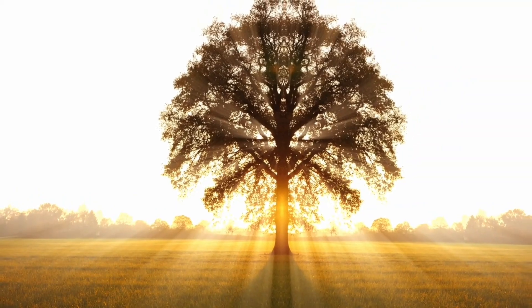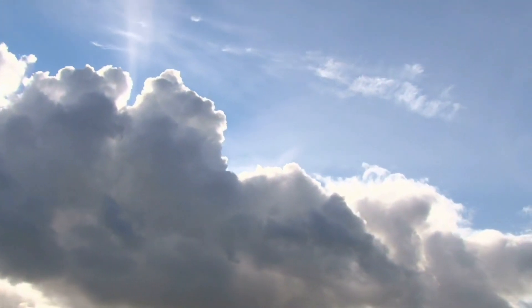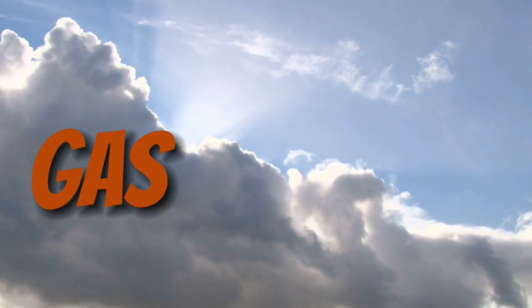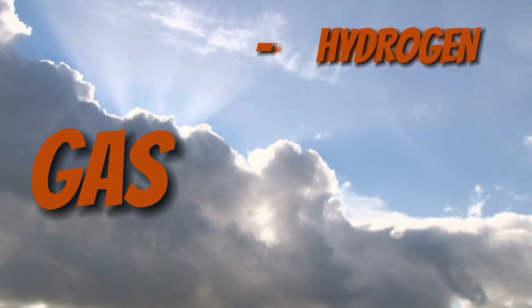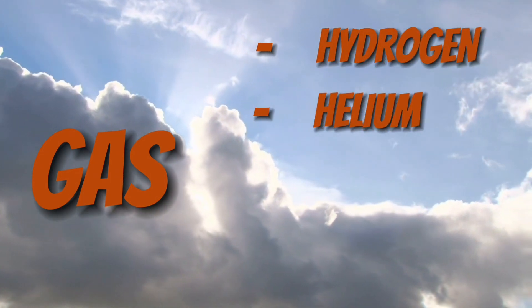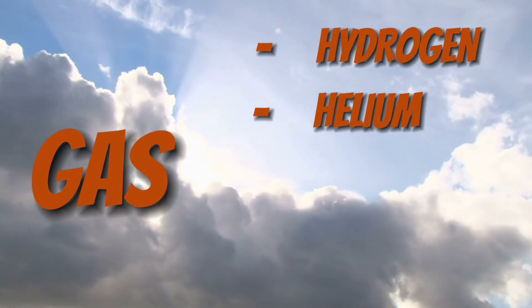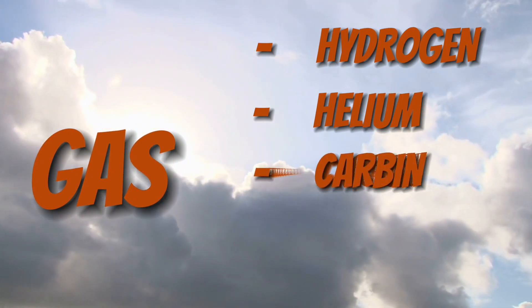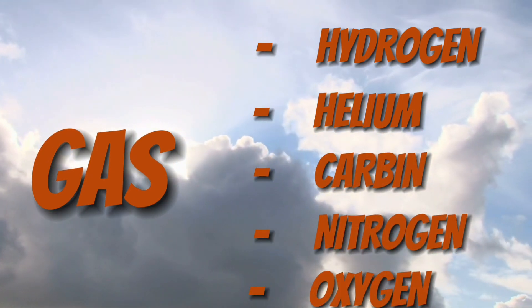The sun is composed of gas. The majority of this gas is hydrogen and helium, though there is also some carbon, nitrogen, and oxygen. It shines so bright.